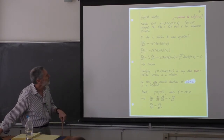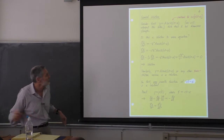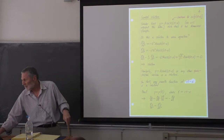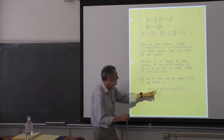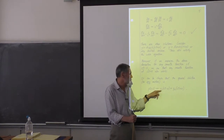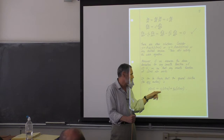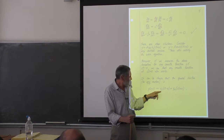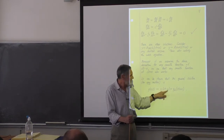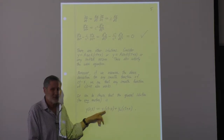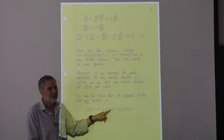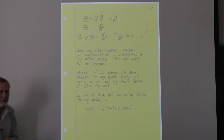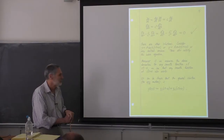We considered a sinusoid just to get a feel for what's going on. But it turns out any smooth function — twice differentiable, to satisfy the wave equation — any smooth function of ct minus x is a solution to the wave equation. The sign doesn't matter, so we can have another solution, and because it's linear we can superpose them. This is the standard general solution for a string.